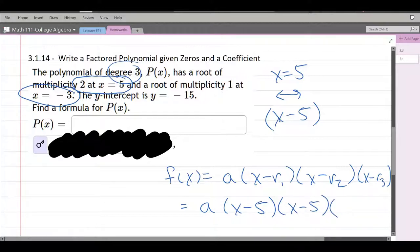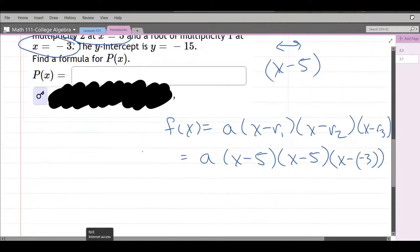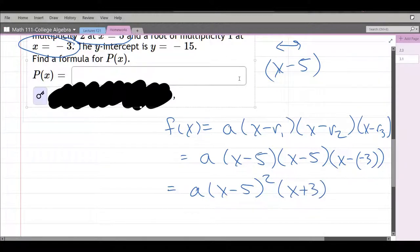Last one, multiplicity 1, so it appears once at x equals negative 3. This is x minus the zero, so it's x minus negative 3. We have x minus 5 times x minus 5, so you can write it as squared. I'm just going to write x plus 3 instead of x minus negative 3.